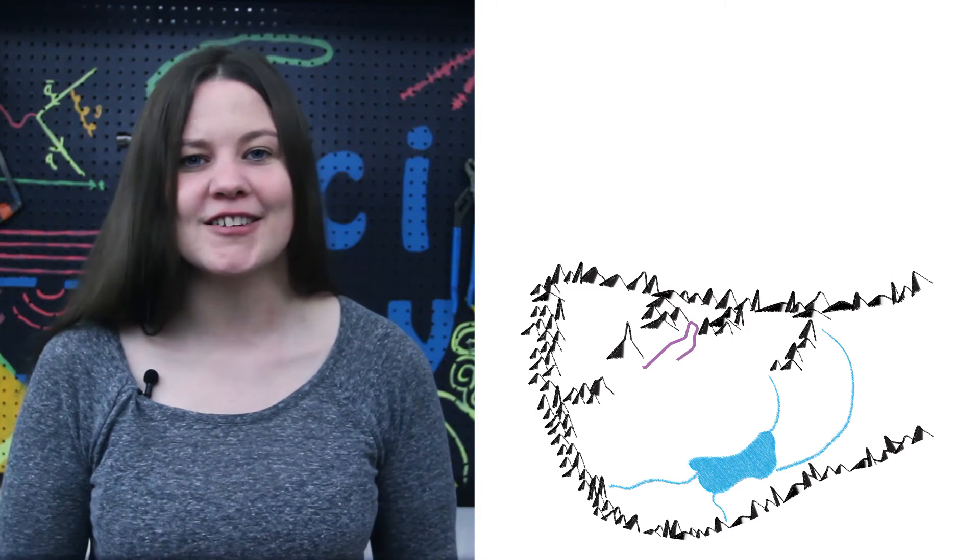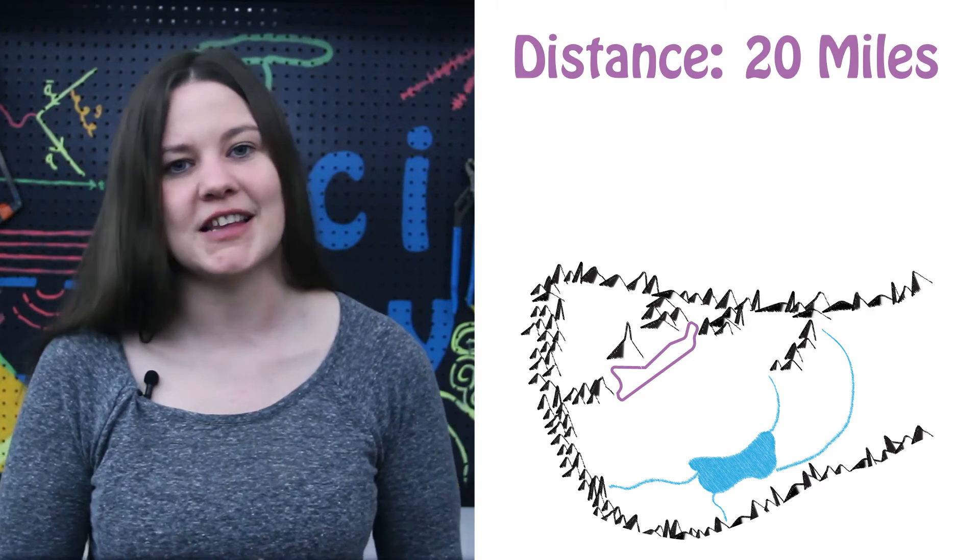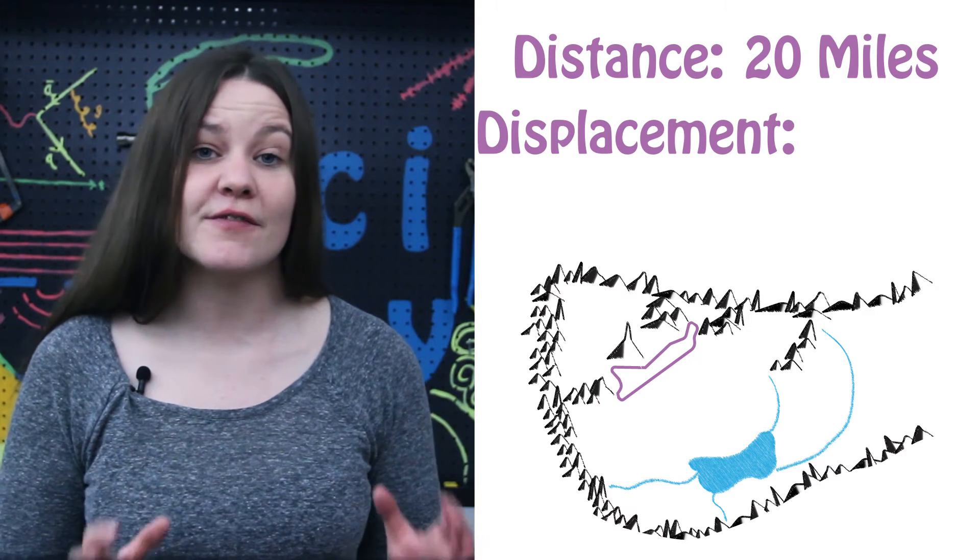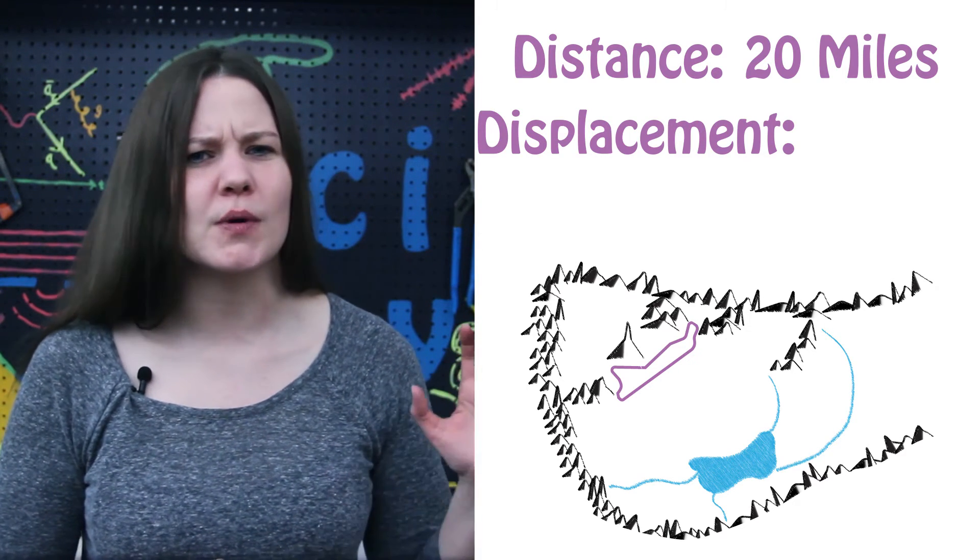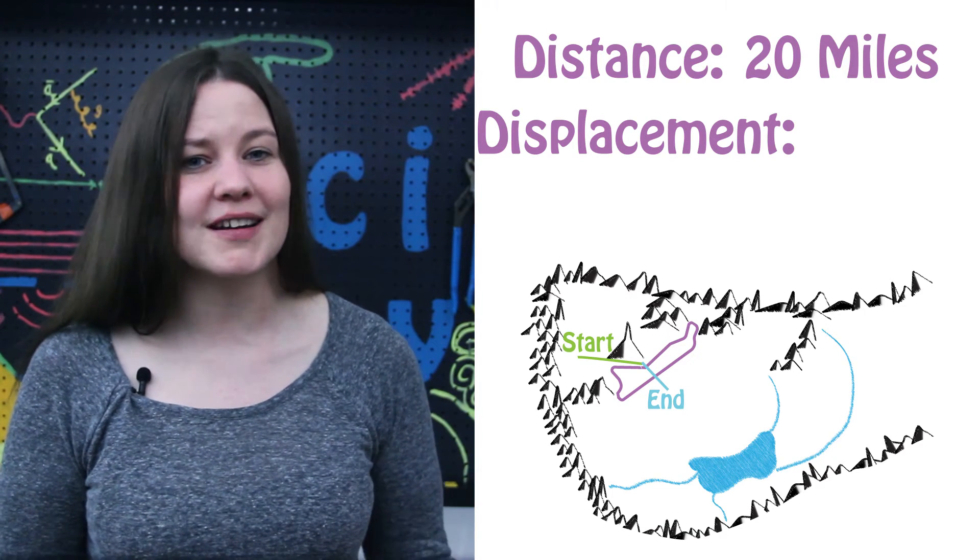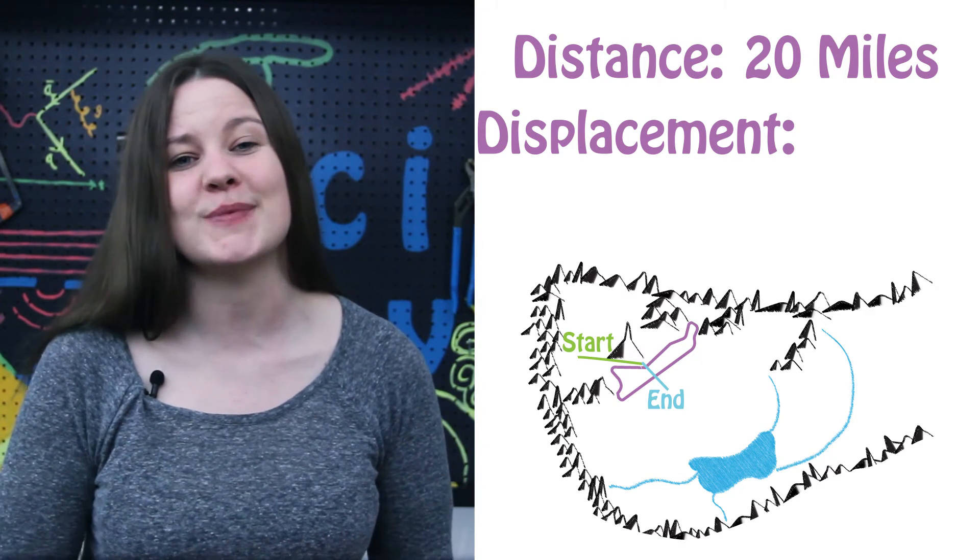If your fitness tracker says that you've biked 20 miles, this is the distance that you've traveled. The displacement is a vector. It is only concerned with where you started and where you stopped. And since you started and ended at your house, your displacement is zero.